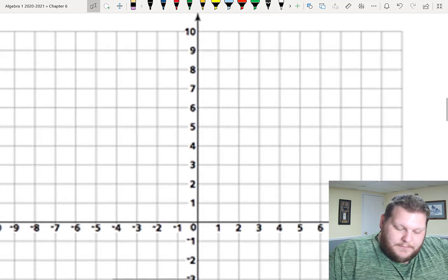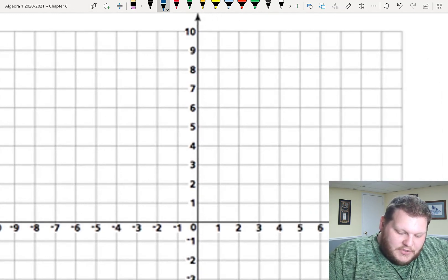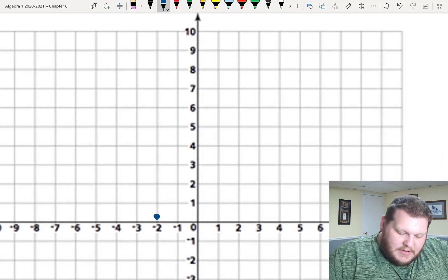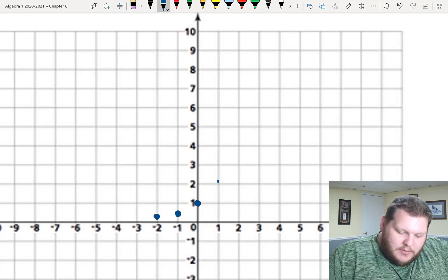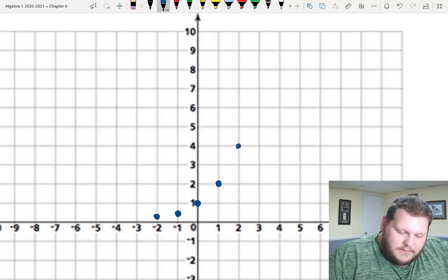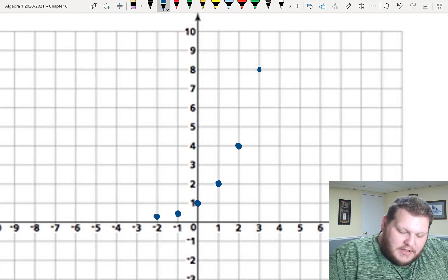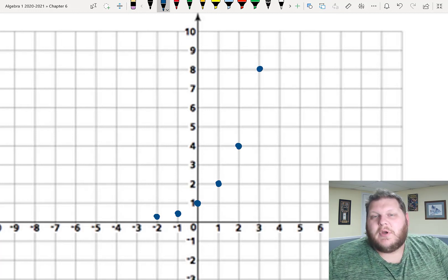So, if I go over to my graph paper, at negative 2, I was at a fourth, negative 1 with a half, 0, 1, 1, 2, 2, 4, and then 3, 8. So, I've got those points. I've got that nice curve that's happening here.